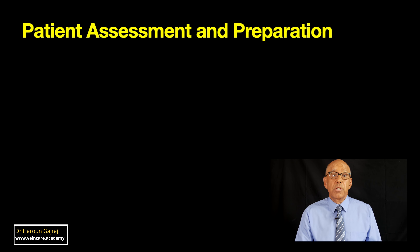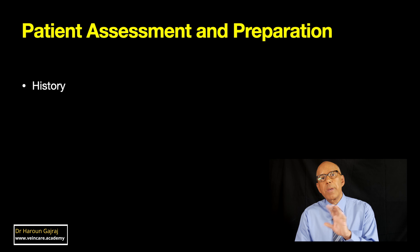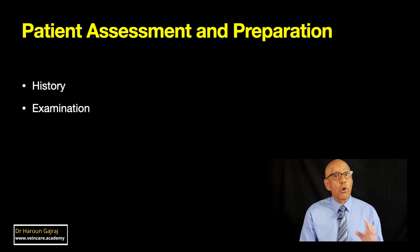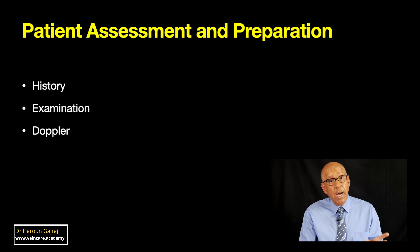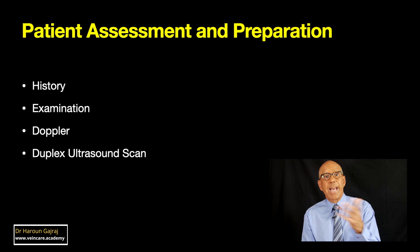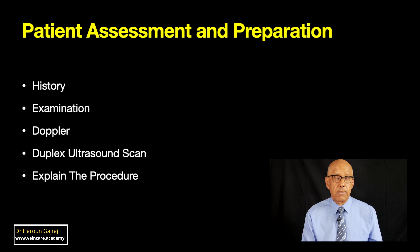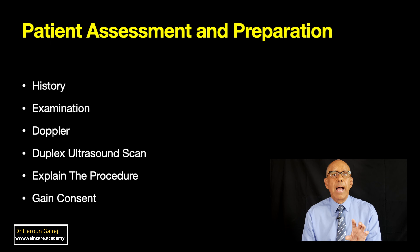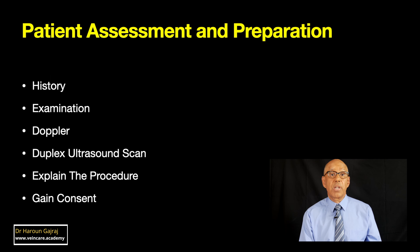Step one is what I call patient assessment and preparation. Before you even pick up a needle and syringe, a thorough patient assessment is crucial. Assess the patient's medical history, their allergies, and any contraindications that might be present. Examine the patient both supine and standing, and perform any investigations you think are required, such as handheld Doppler or venous duplex ultrasound. Explain the procedure in detail, including the risks and benefits, and get informed consent. I strongly advise you to ask the patient to sign a consent form as part of the evidence of the consent process.